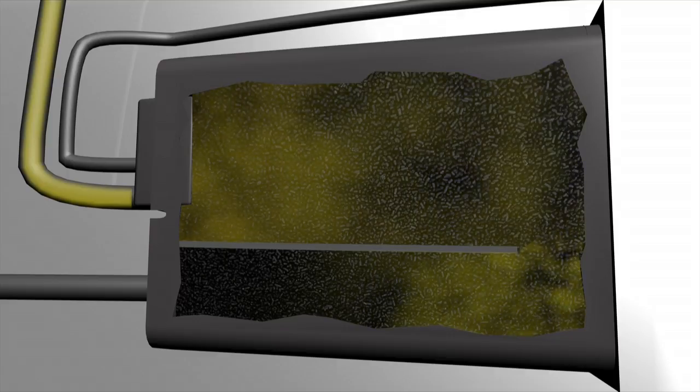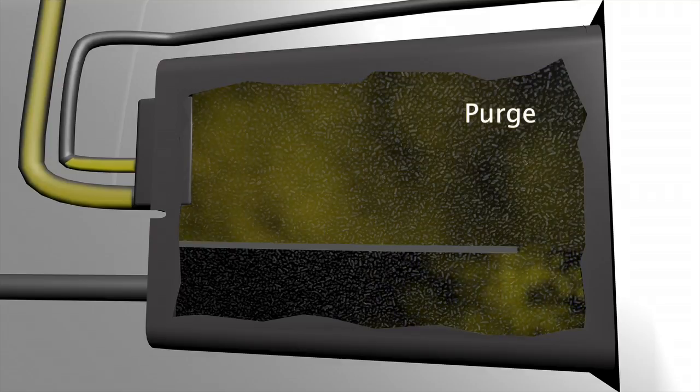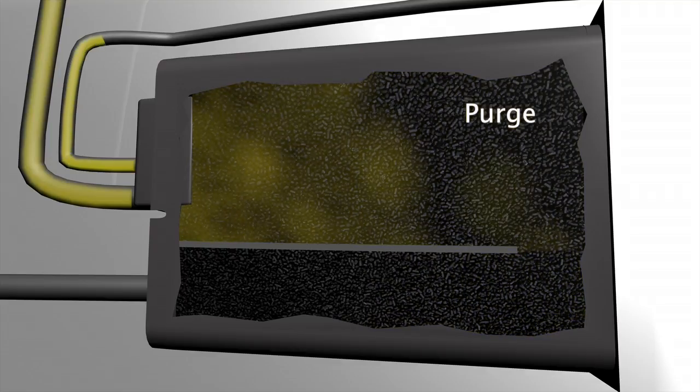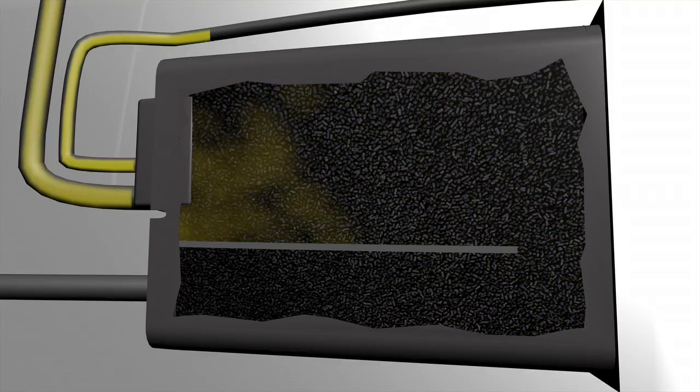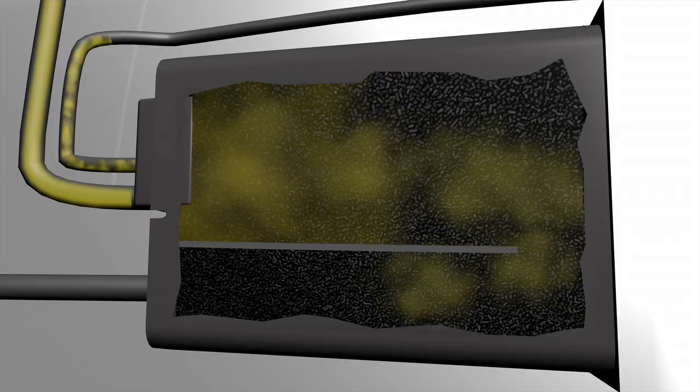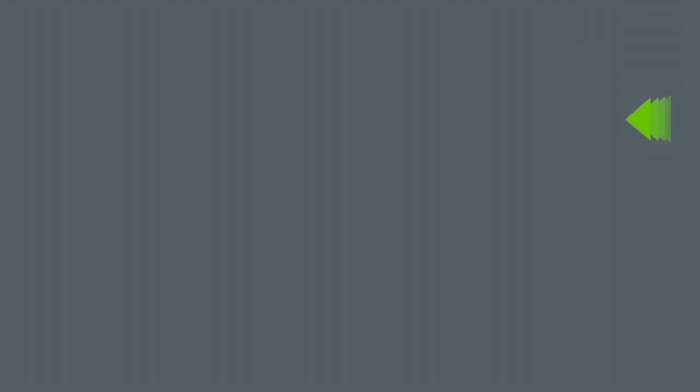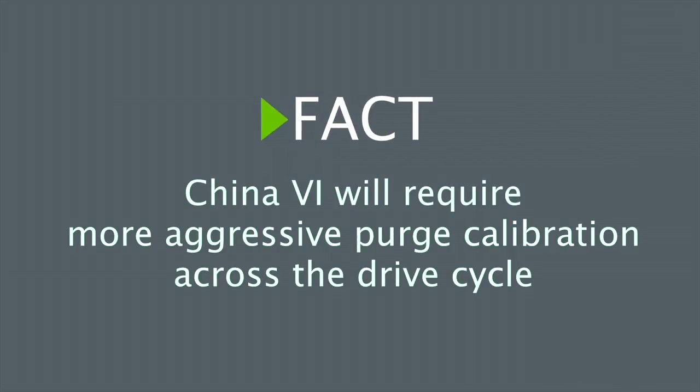The next time the car is driven, the onboard computer will open a valve and the manifold vacuum will pull clean air into the canister, purging the hydrocarbons from the carbon. The vapours then head to the engine and are burned as fuel. If the carbon is purged quickly and efficiently, the canister is ready for the next parking event. If not, there is less capacity to capture the hydrocarbons and vehicle emissions will rise. China 6 will require more aggressive purge calibration across the drive cycle.